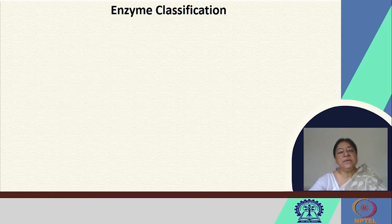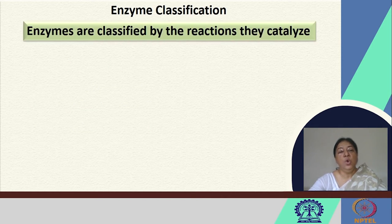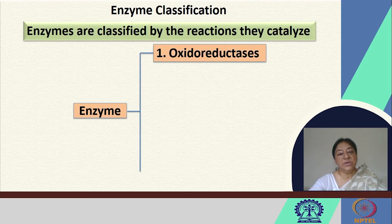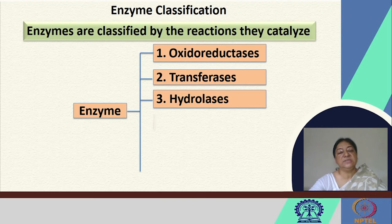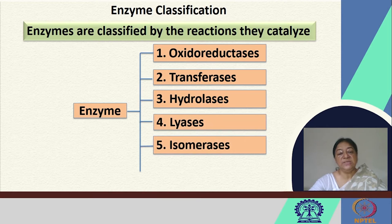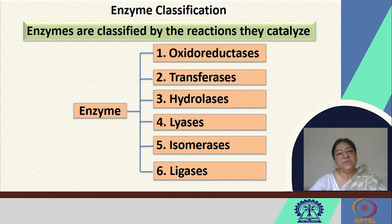In the enzyme classifications we learned in the first lecture of this module, enzymes are classified according to the reactions they catalyze. For example, we have oxidoreductases, transferases, hydrolases, lyases, isomerases, and ligases. We will visit each of these types, looking at specific examples to see how they conduct their catalytic operation.